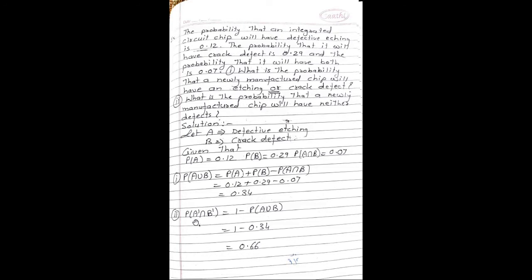In the second part, we find P(A complement ∩ B complement) = 1 − P(A ∪ B) = 1 − 0.34. The answer is 0.66.